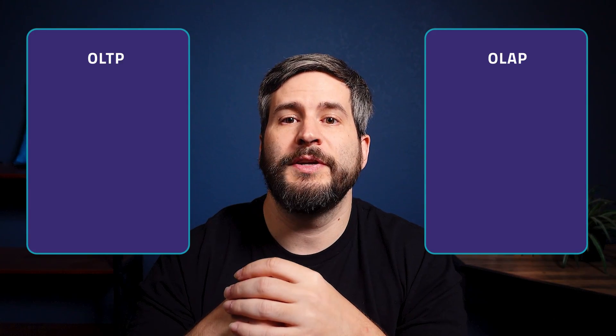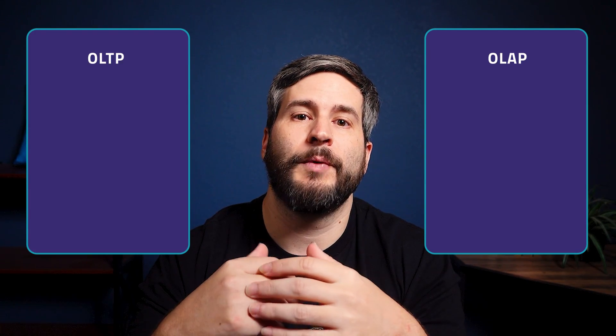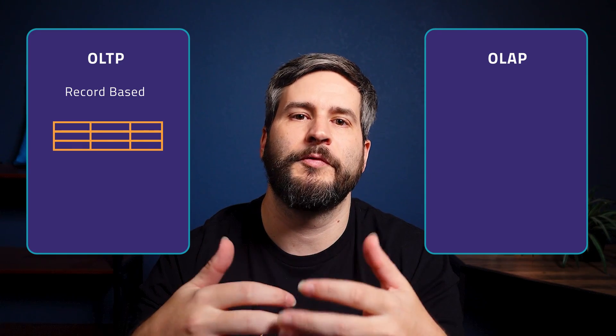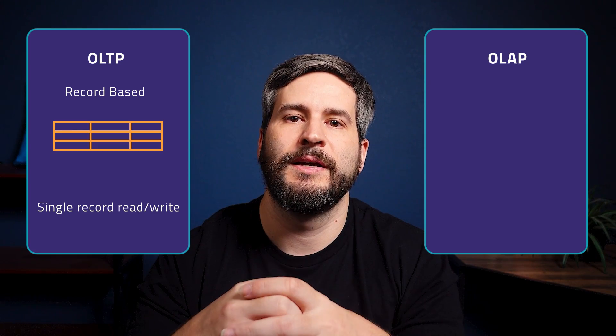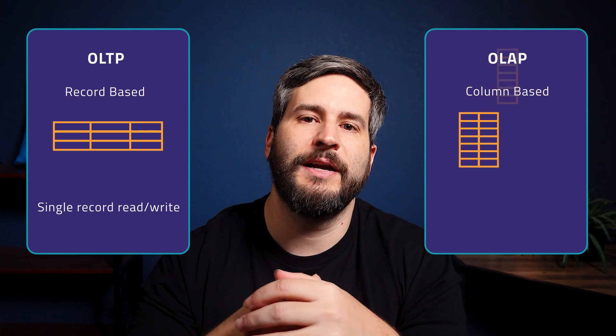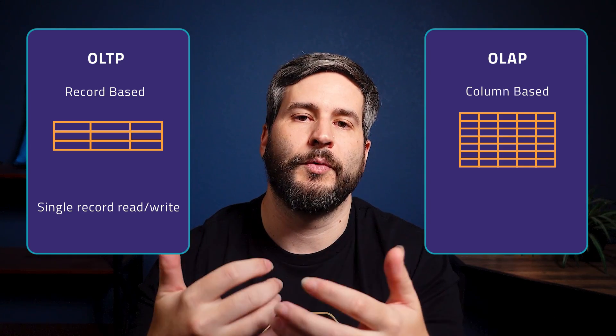OLAP systems adopt a column-oriented approach where data is read and processed based on columns rather than rows. The columnar structure is particularly advantageous for performing aggregations and analytical operations efficiently. OLTP databases are often referred to as record-based stores since they focus on storing individual transactional records, prioritizing fast writing and optimized handling of high-performance single record inserts or reads. OLAP databases, on the other hand, are known as column-based stores because they read data by column, aligning with typical analytical requirements.